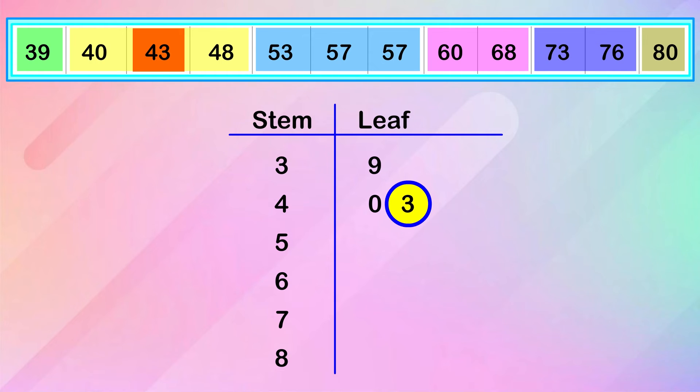The next value is 48 degrees Fahrenheit. We'll add one more leaf, 8, to the stem 4. Our fifth value is 53 degrees Fahrenheit, so we'll add the leaf, 3, to the stem 5. We'll quickly enter the rest of the data.